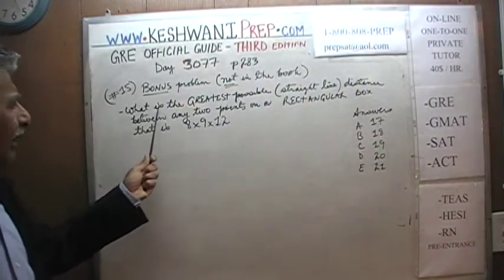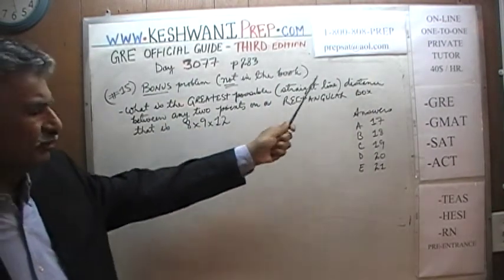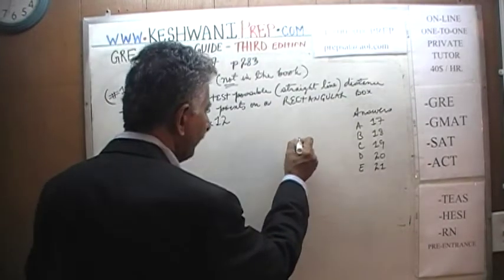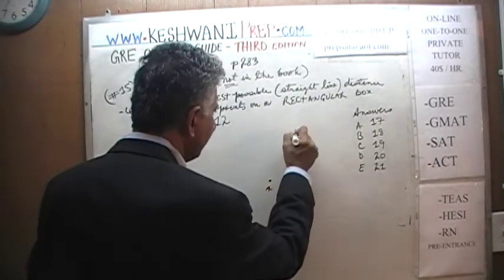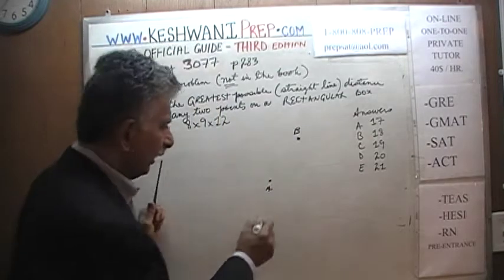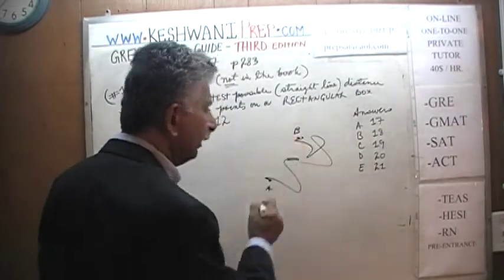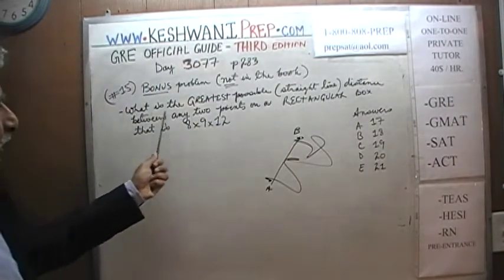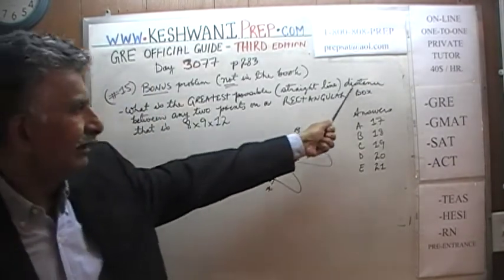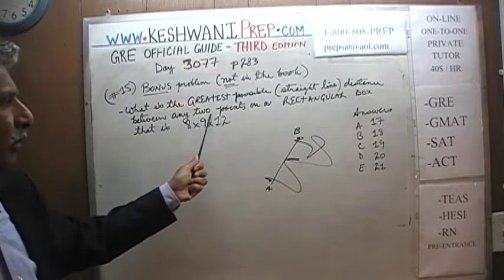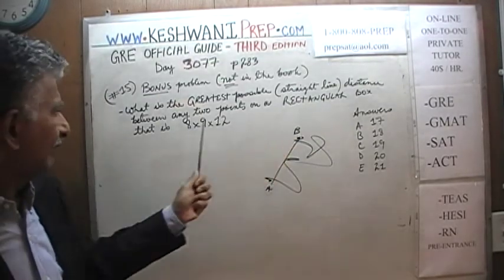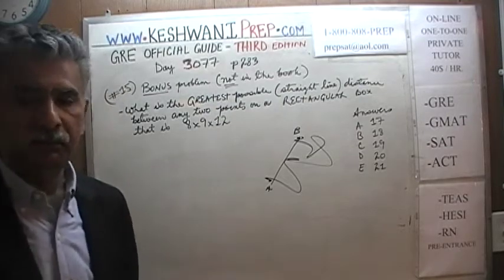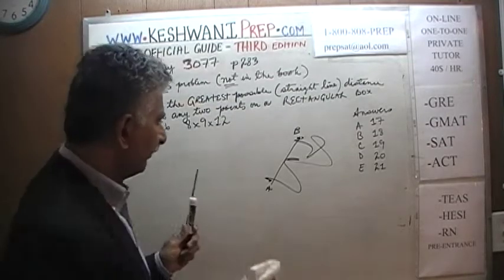The problem says: what is the greatest possible straight-line distance — it has to be a straight-line distance, obviously — because if you are given two points and asked to find the greatest possible distance between A and B, obviously we are not going to go all over the place to get to it. It has to be a straight-line distance. What is the greatest possible straight-line distance between any two points on a rectangular box that is 8 by 9 by 12? Let's draw the rectangular box first.